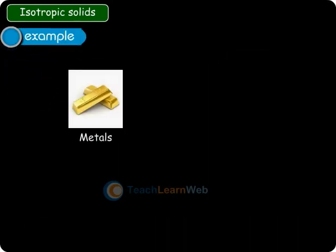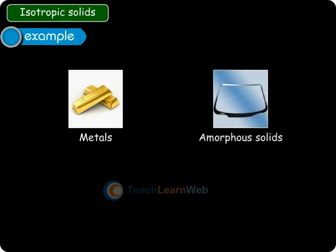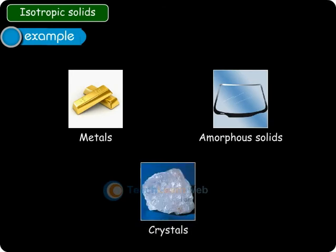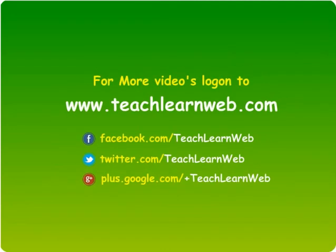Examples of isotropic solids include metals, amorphous solids like glass, and regular system of crystals like rock salt.